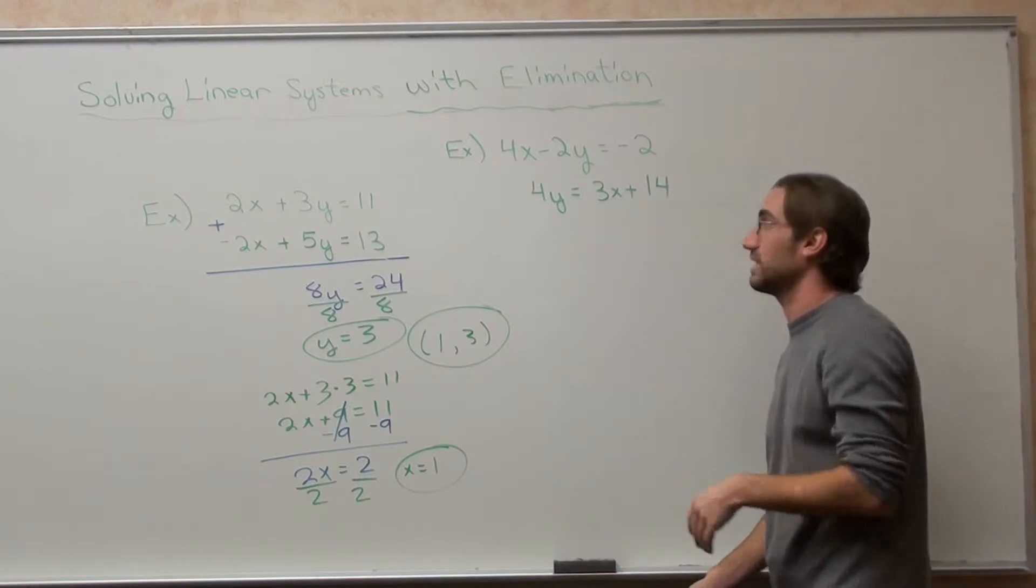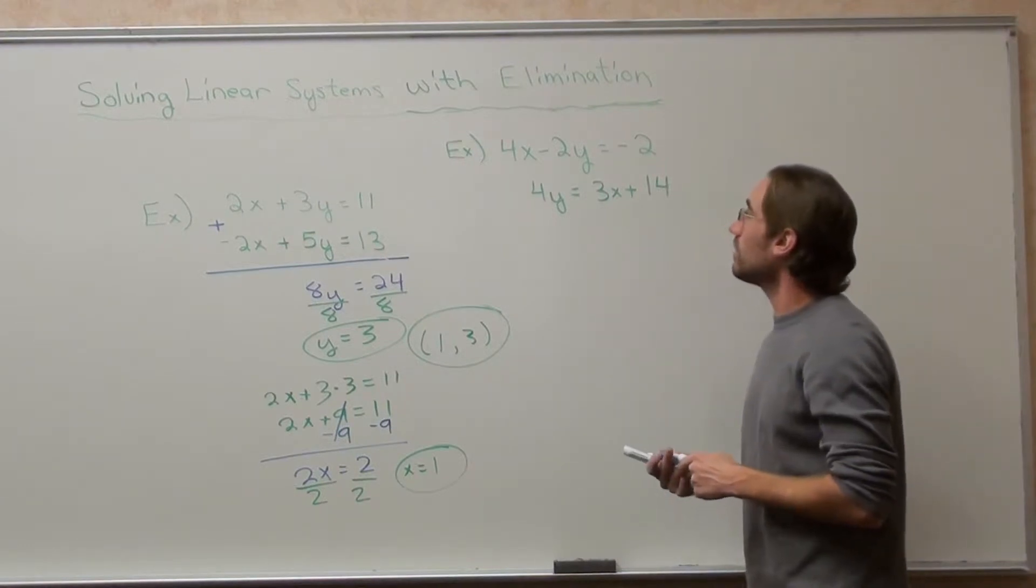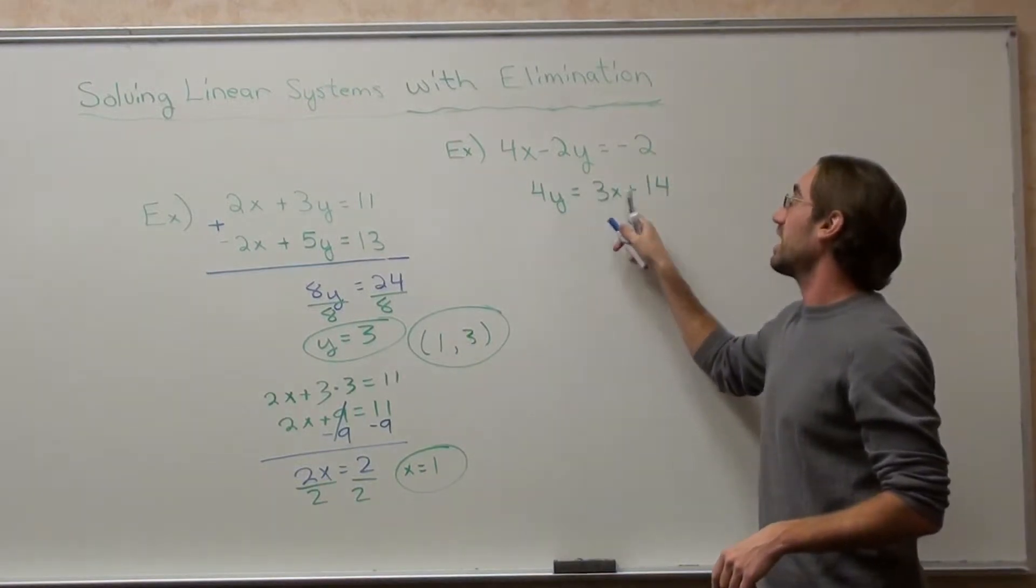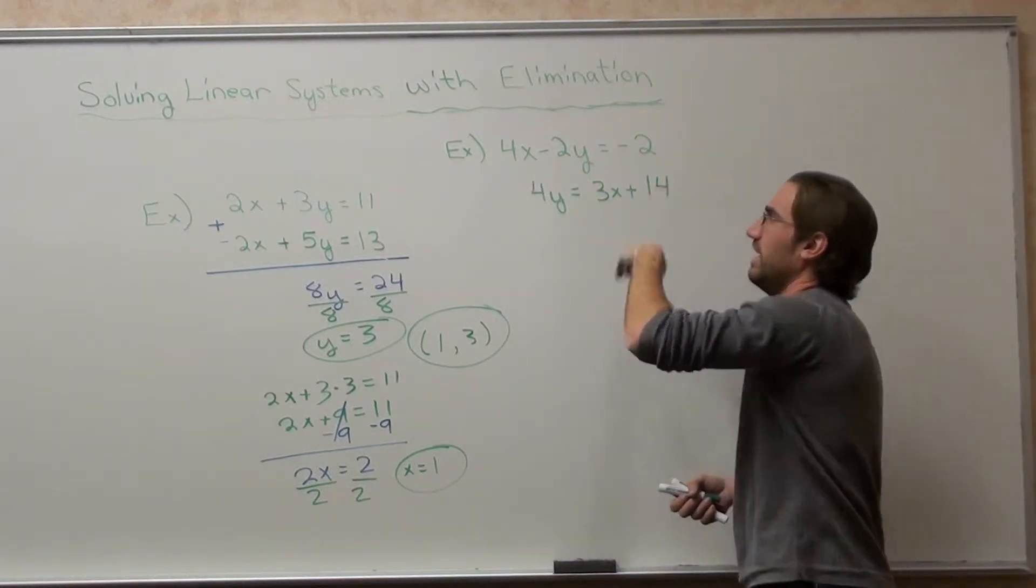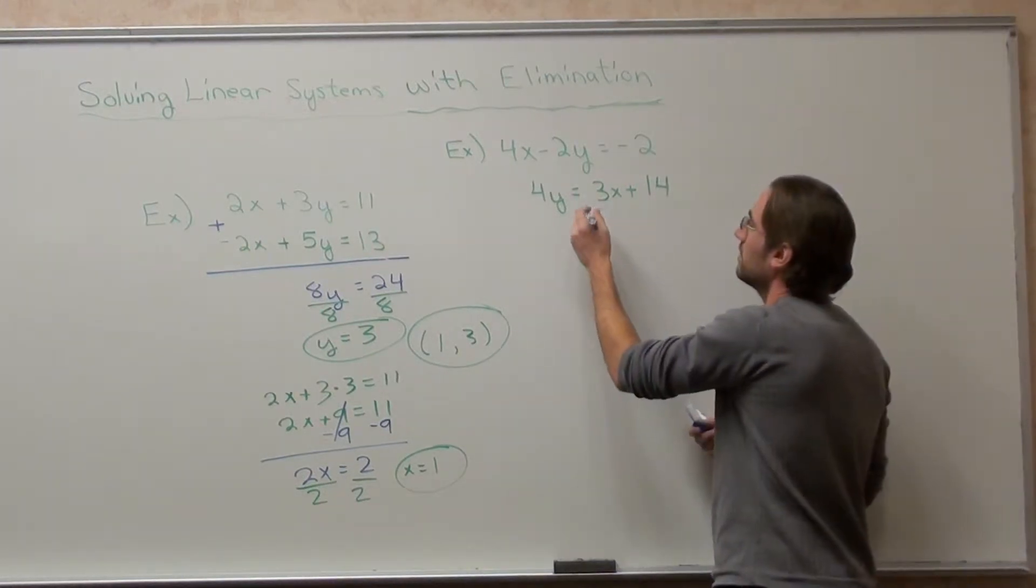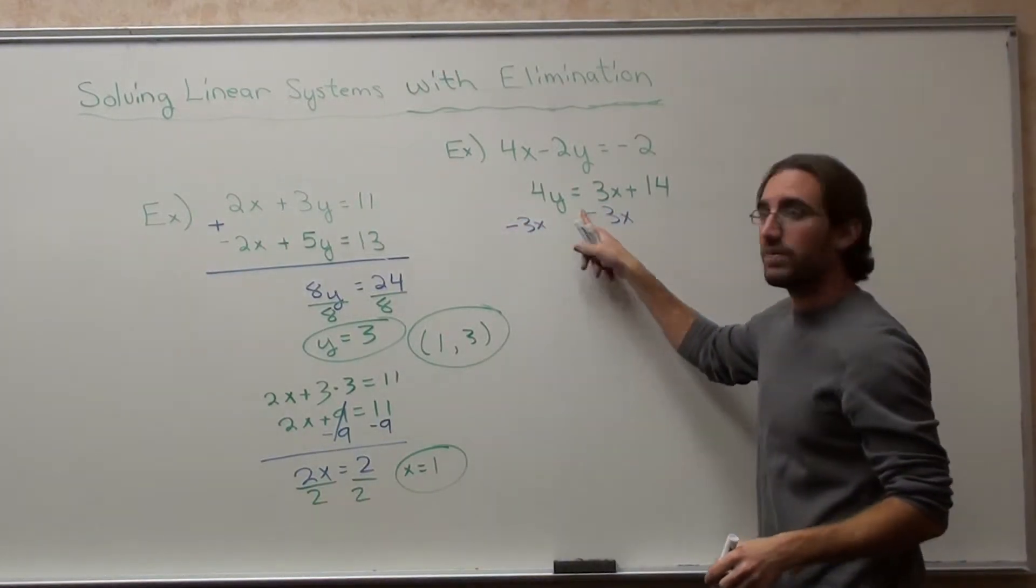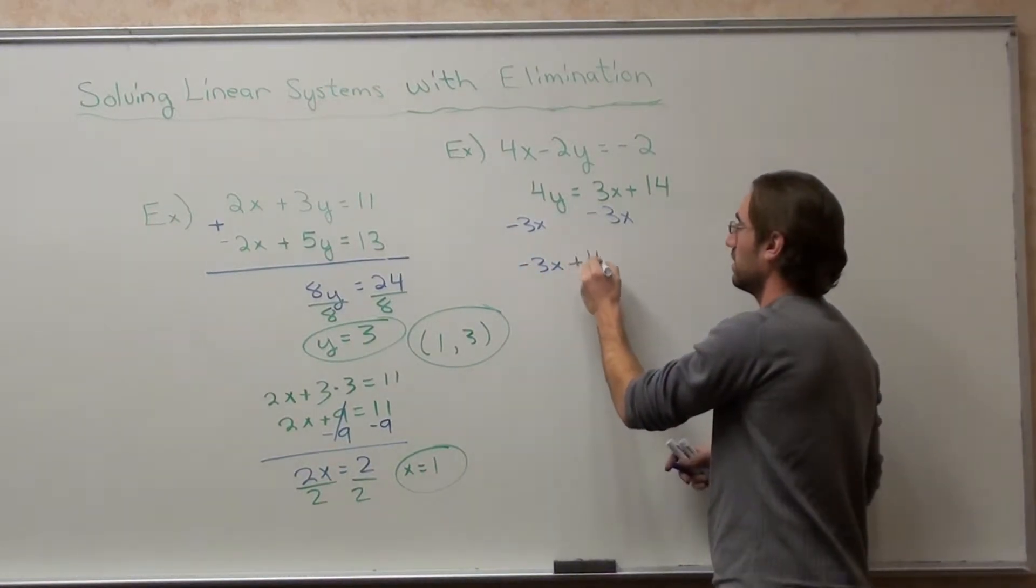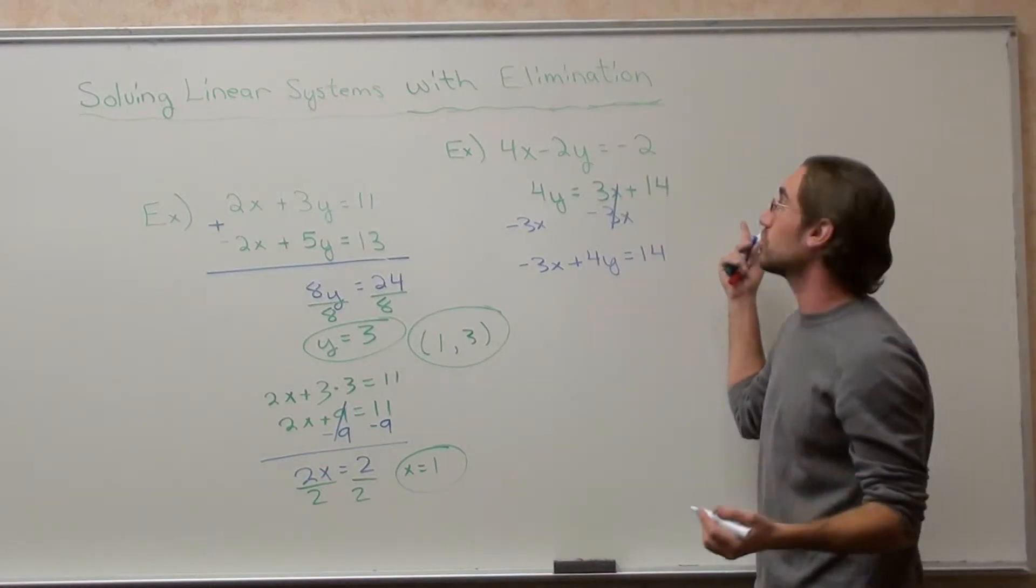Not all elimination problems, though, are pleasant. This one is an example of one that's not as pleasant, and there are a couple of reasons why. First of all, they're not even lined up. I've got x minus y equals a number, I've got y equals x plus a number. So what I want to do is make sure I get the x on this side, or you could subtract the x on that side, but let's put all the x's on one side and get it set equal to the number. That's probably the best and easiest way. So I'm going to subtract 3x from this equation, and what I get is negative 3x plus 4y equals 14. And here's my other equation, 4x minus 2y equals negative 2.